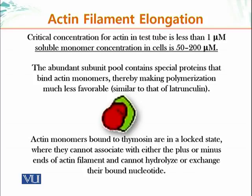So we have a great excess of monomers present in the cell, and yet they still do not add on to existing filaments and form new ones. Why? Although there is an abundant subunit pool, cells also contain special proteins which can bind the monomers and prevent them from adding on to existing plus ends of actin filaments.